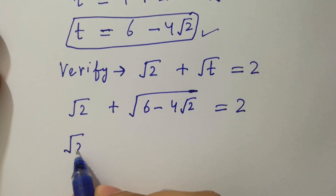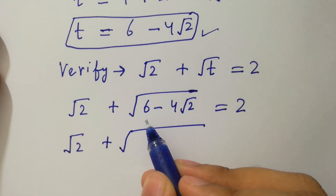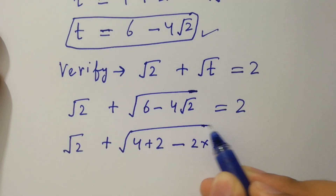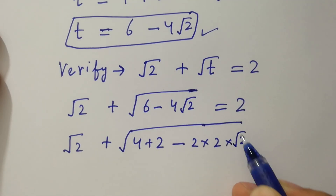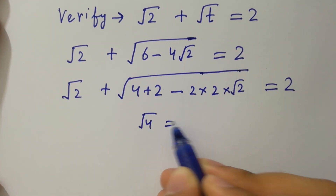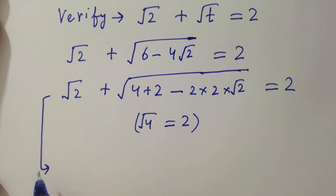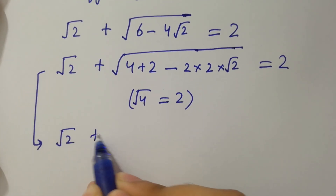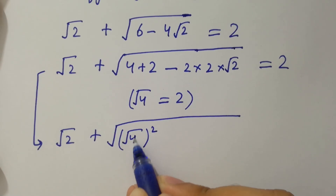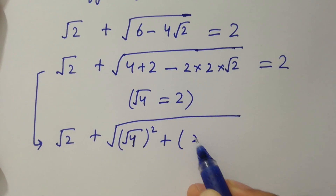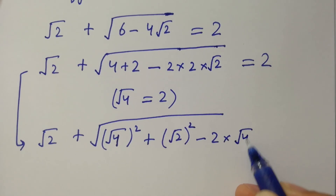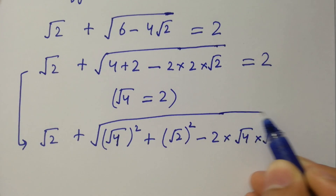Next, we have square root of t as 4 plus 2 minus 4, which is 2 times 2 times square root of 2, equal to 2. So as square root of t equals 2, this is the same as square root of 2 plus square root of: 4 squared plus square root of 2 squared minus 2 times square root of 4 times square root of 2, equal to 2.